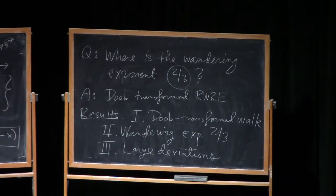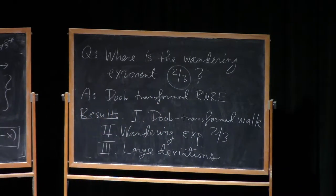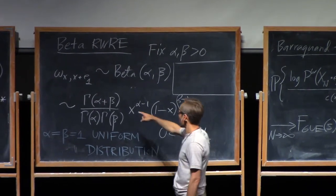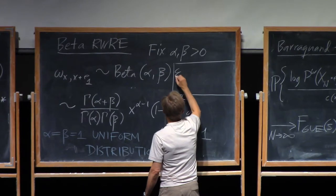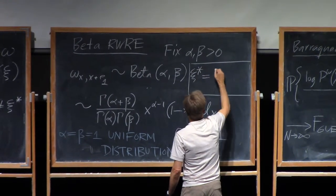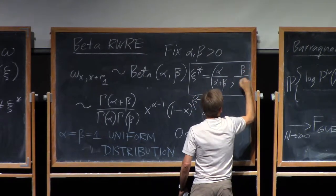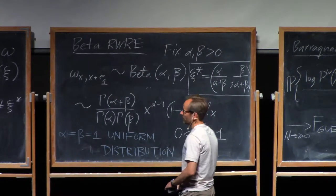All right. So let me just start stating some precise results. So now, by the way, when we're in this beta situation, let's record this. The mean of a beta random variable is alpha over alpha plus beta. So the law of large numbers velocity, xi star, is now alpha over alpha plus beta comma beta over alpha plus beta. So that's kind of good to keep in mind.